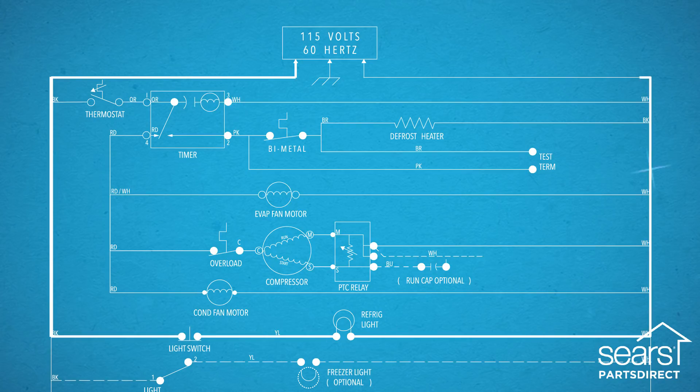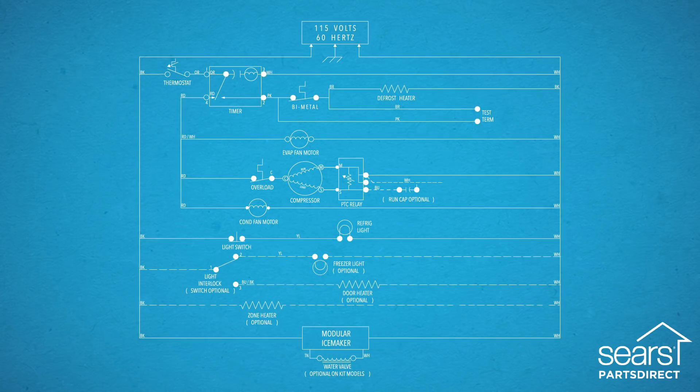Electric current travels in a loop called a circuit. The circuit begins at the positive prong of the power cord and goes to the light switch through the black wire.